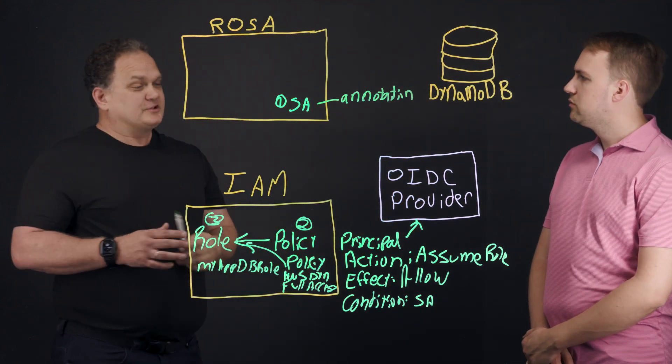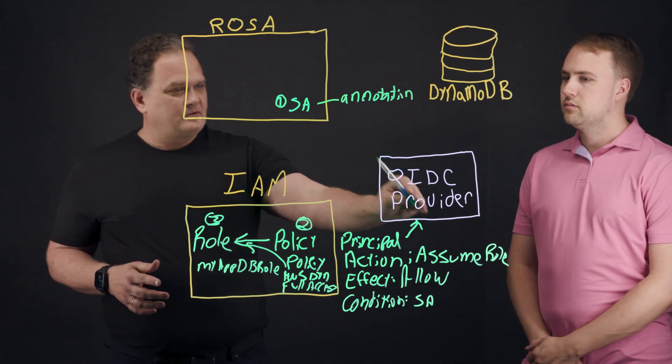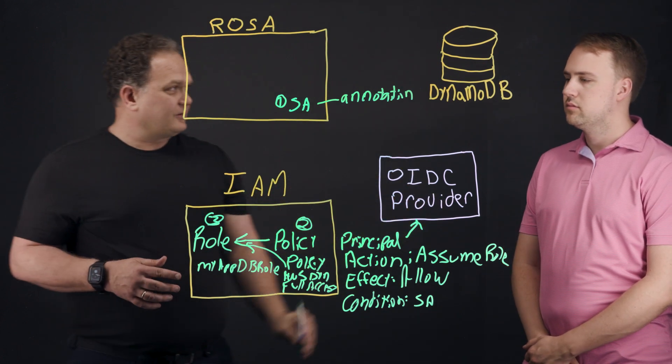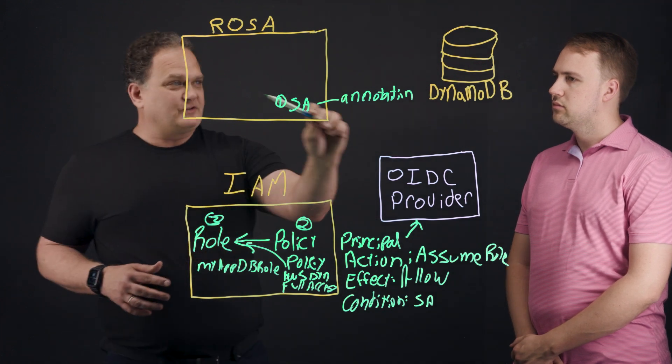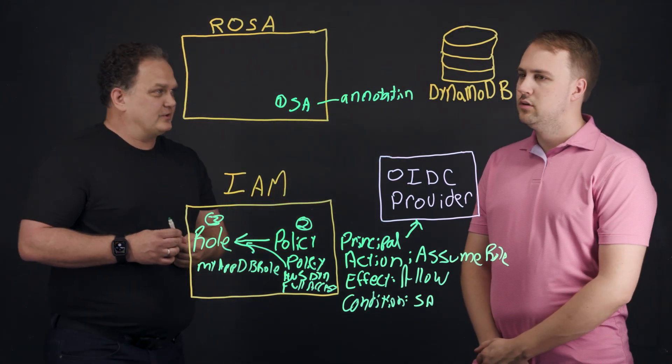And this annotation says, you know, we're going to need some additional permissions here. And we're going to set the OIDC provider and the role to be called when the service account needs to access DynamoDB.